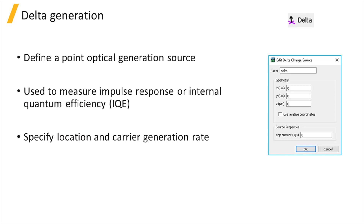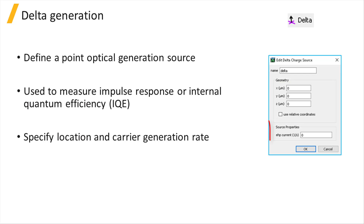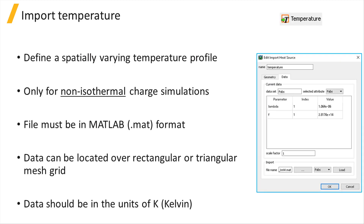In the Source Properties window, the location of the point where optical generation occurs, and also the generation rate as the number of electron-hole pairs generated per second, can be specified.